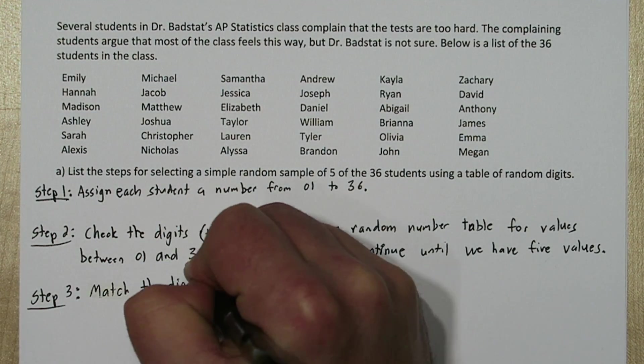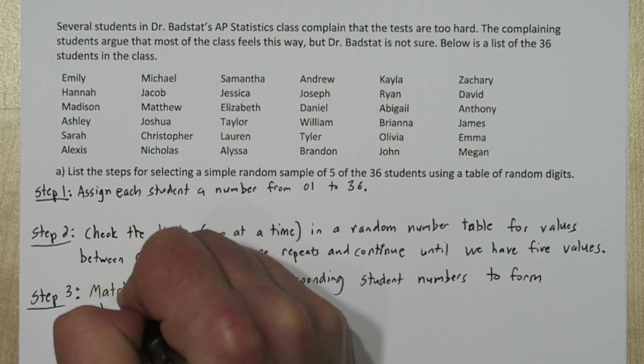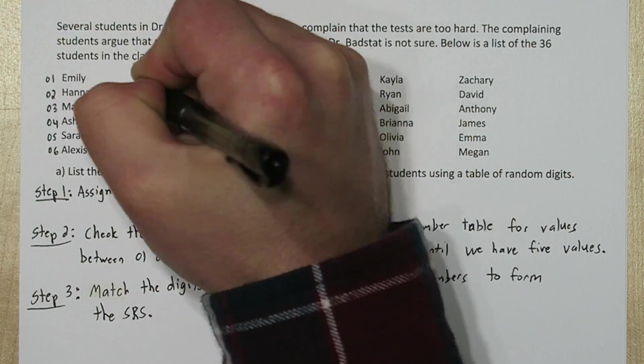For step 3 we're going to match the digits to the corresponding student numbers to form our simple random sample. So now we're going to use our method. First we need to assign all the students a number.